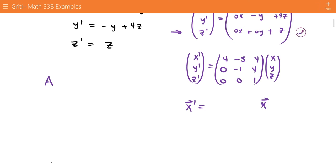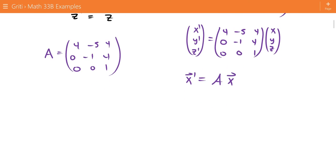So if we define A to be 4, negative 5, 4, 0, negative 1, 4, 0, 0, 1, and this equation just reduces to what we've been dealing with, x prime equals Ax. So now we can go about solving this equation.